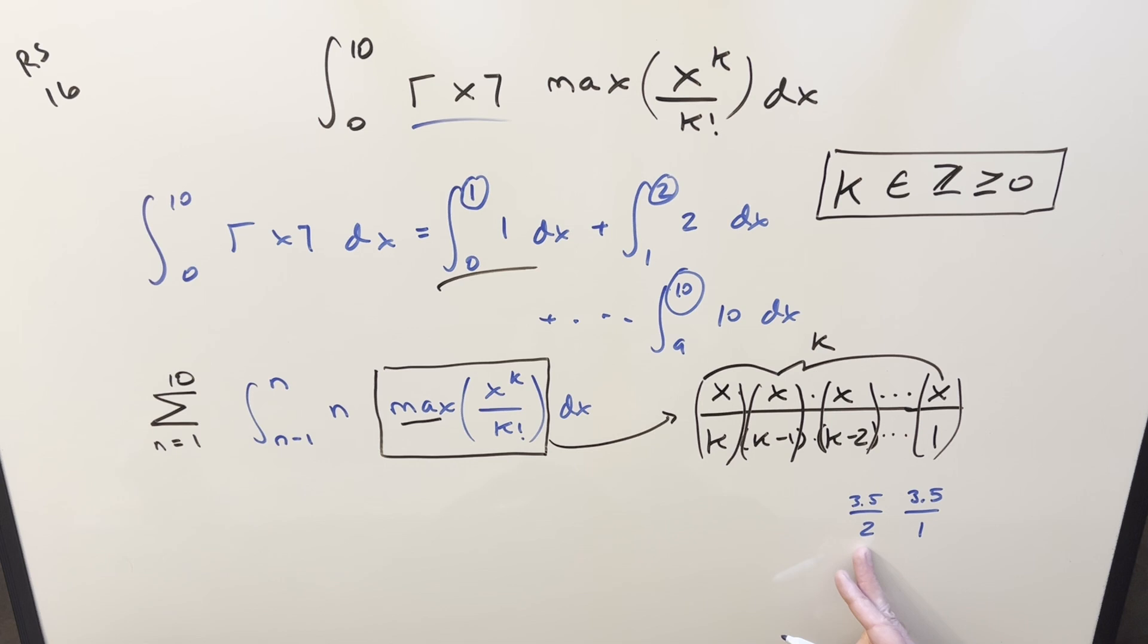So then if we do it again, and we multiply by 3.5 over 3, we've increased it a little more. But if I do one more term, and I multiply by 3.5 over 4, this is less than 1.